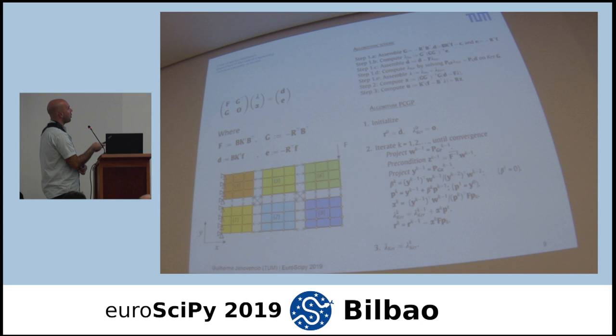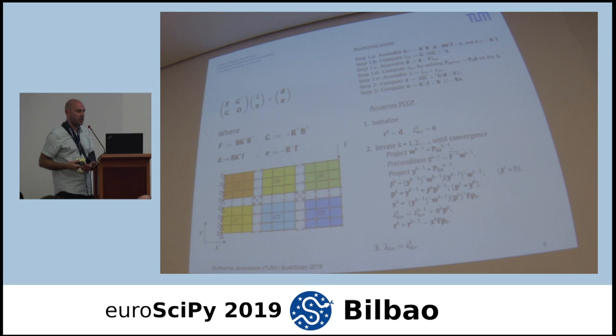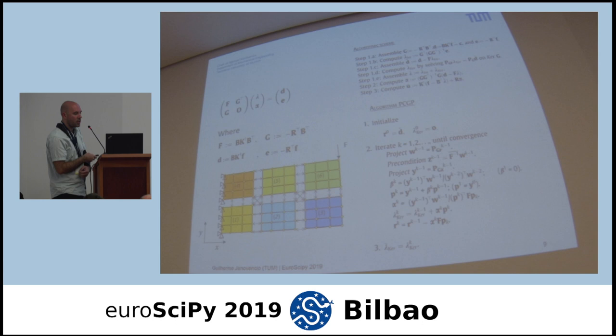The combination of direct and iterative methods is visible here: the interface system is solved with CG, but internally we compute a pseudo-inverse — the solution of the local linear system. For the pseudo-inverse, we use Cholesky factorization if the system is symmetric, or SuperLU if it is not symmetric. We use the SciPy factorization techniques for this.